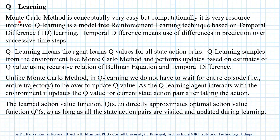So exactly how does Q-learning improve over the Monte Carlo method? In the Monte Carlo method, the entire episode is used to update the Q-value for only one state-action pair — that is, the state in which the episode starts and the first action the agent takes. Whereas in Q-learning, we update the Q-value for the state-action pair corresponding to the current state and current action. Unlike Monte Carlo, in Q-learning we do not have to wait for the entire episode to be over to update the Q-value.